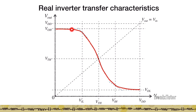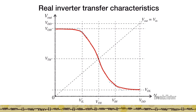These voltages, VIL and VIH, dictate the noise margins of the inverter. Between 0 and VIL, the gain of the circuit is less than 1, indicating noise rejection — if the input changes, the change in the output is less than the change in the input. Similarly, when the input is between VIH and VDD, the gain is less than 1, indicating that disturbances at the input are attenuated at the output. However, in the transition region the gain is more than 1, so disturbances are amplified. Hence, we keep our Boolean values in the low-gain regimes.